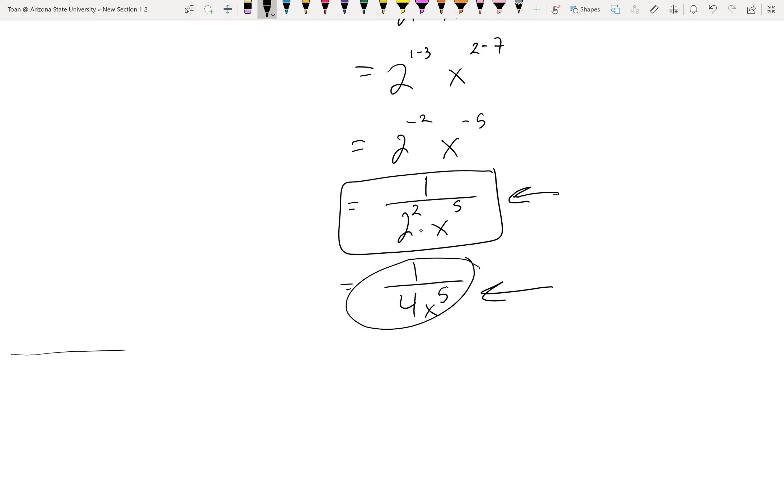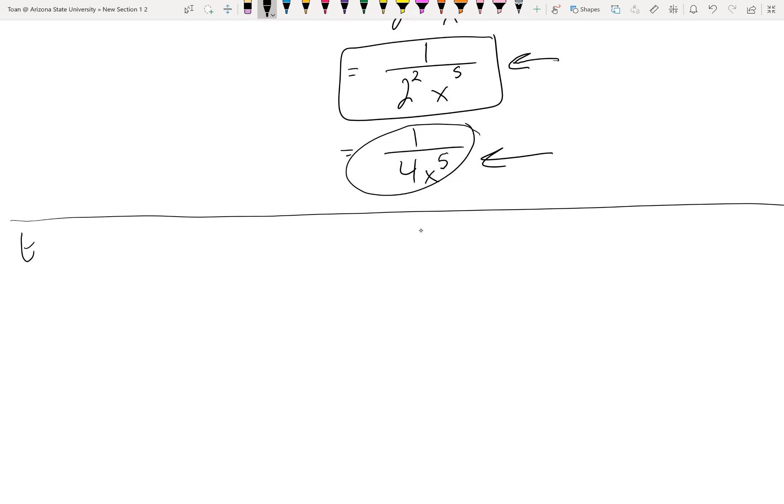Let's just take a look at one more example just so you have more than one in your books. Let's say I ask you to simplify x⁻³ big parentheses x⁻³ times 2x⁻⁴ over x² raised to the third power.